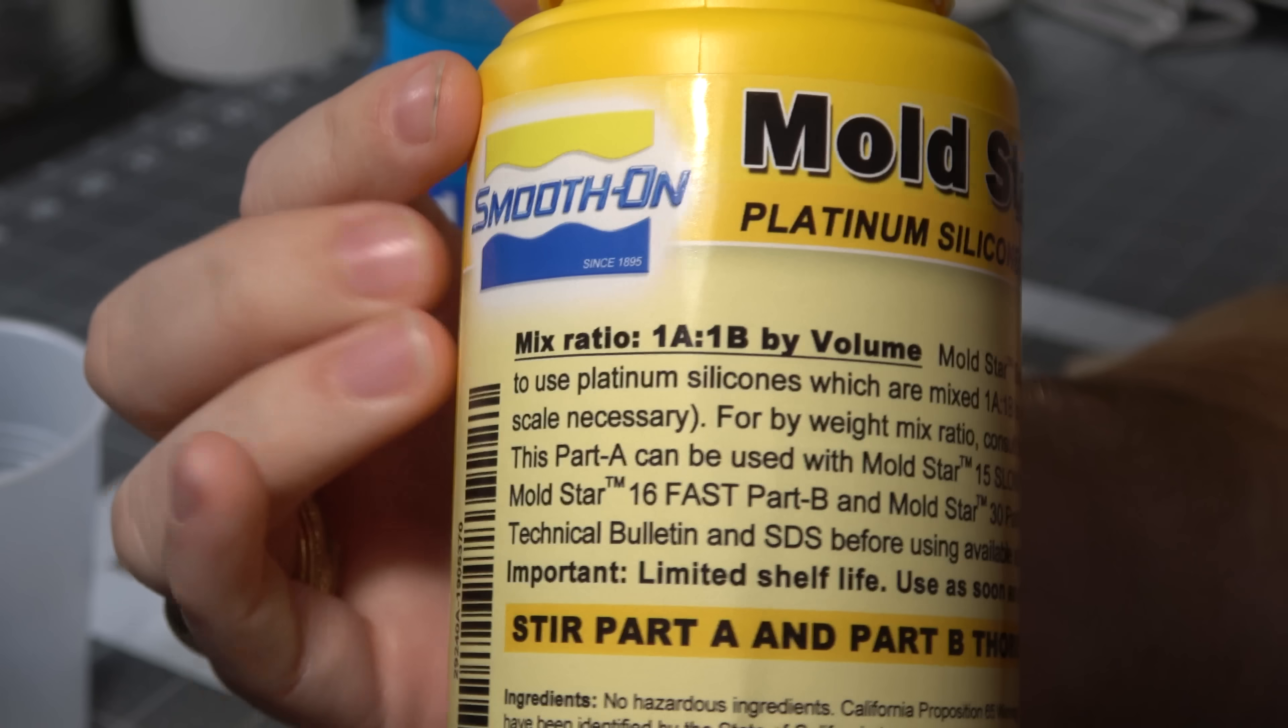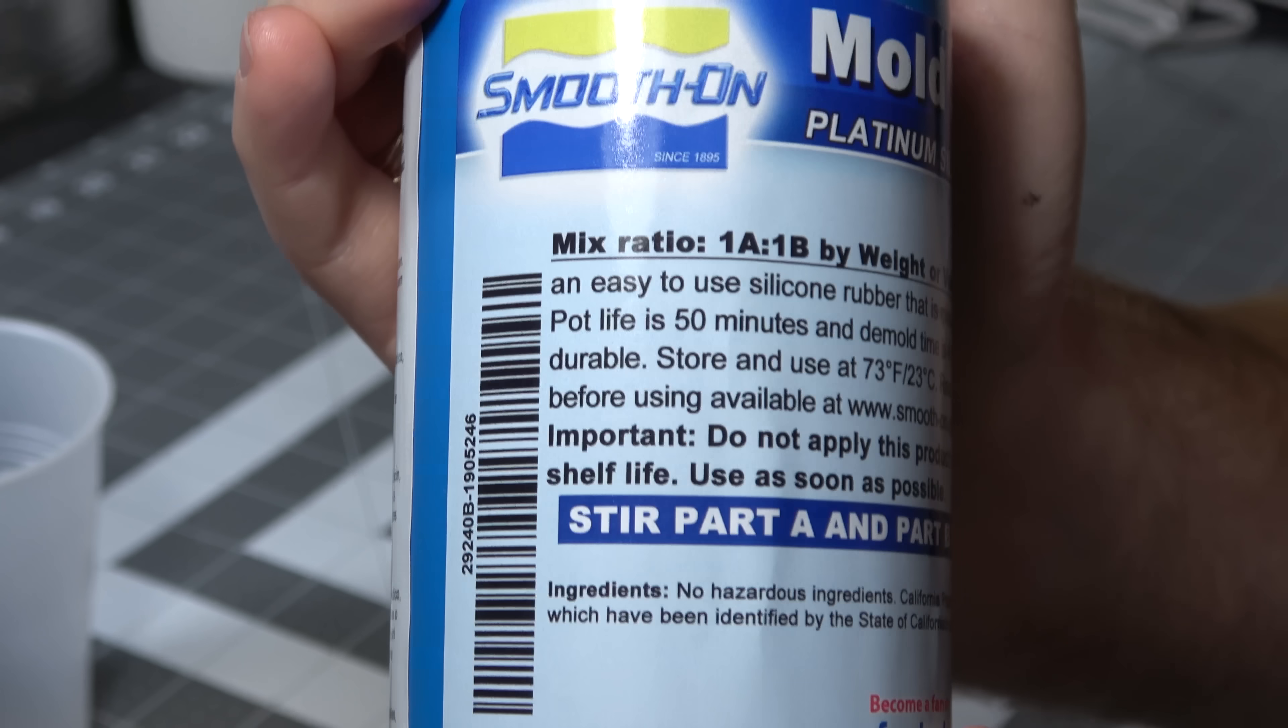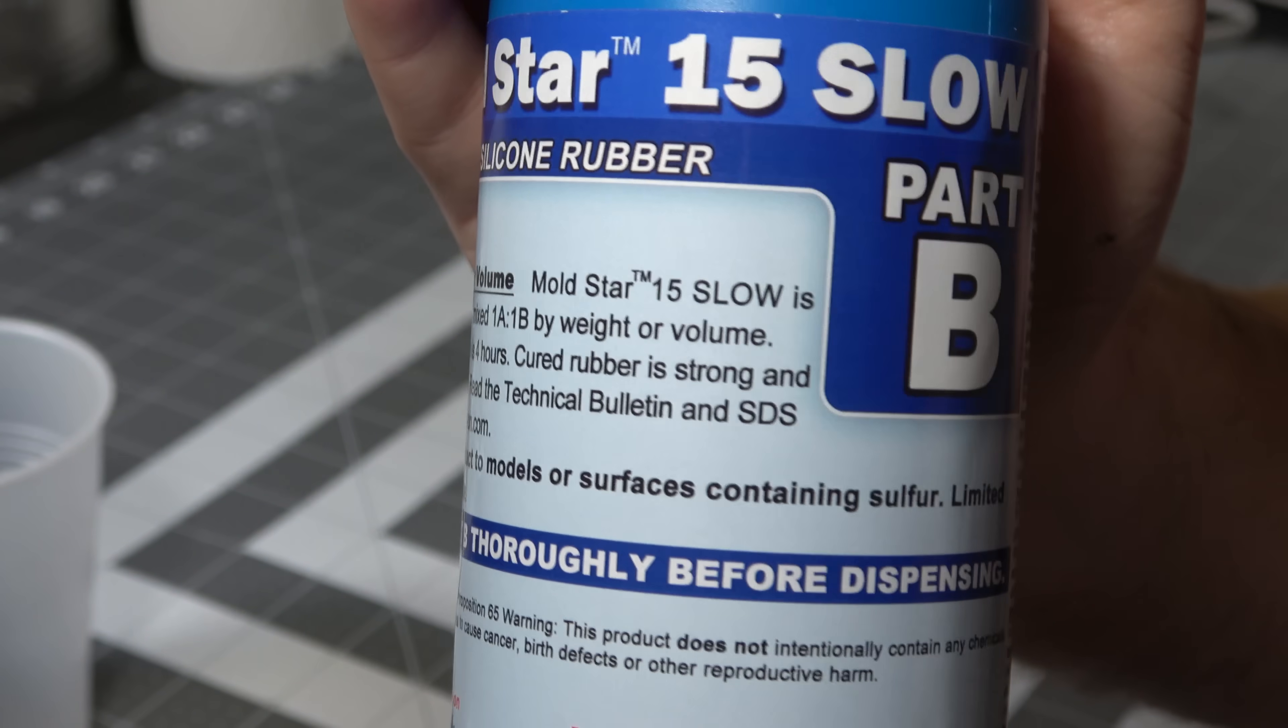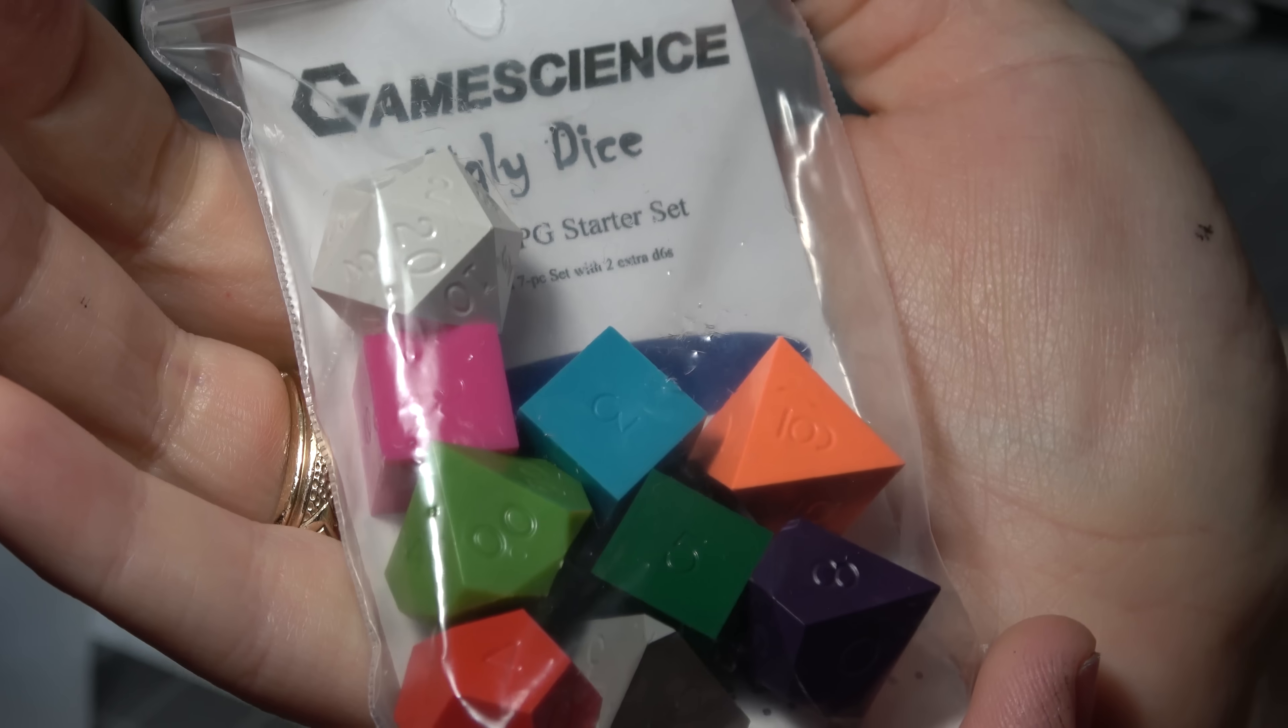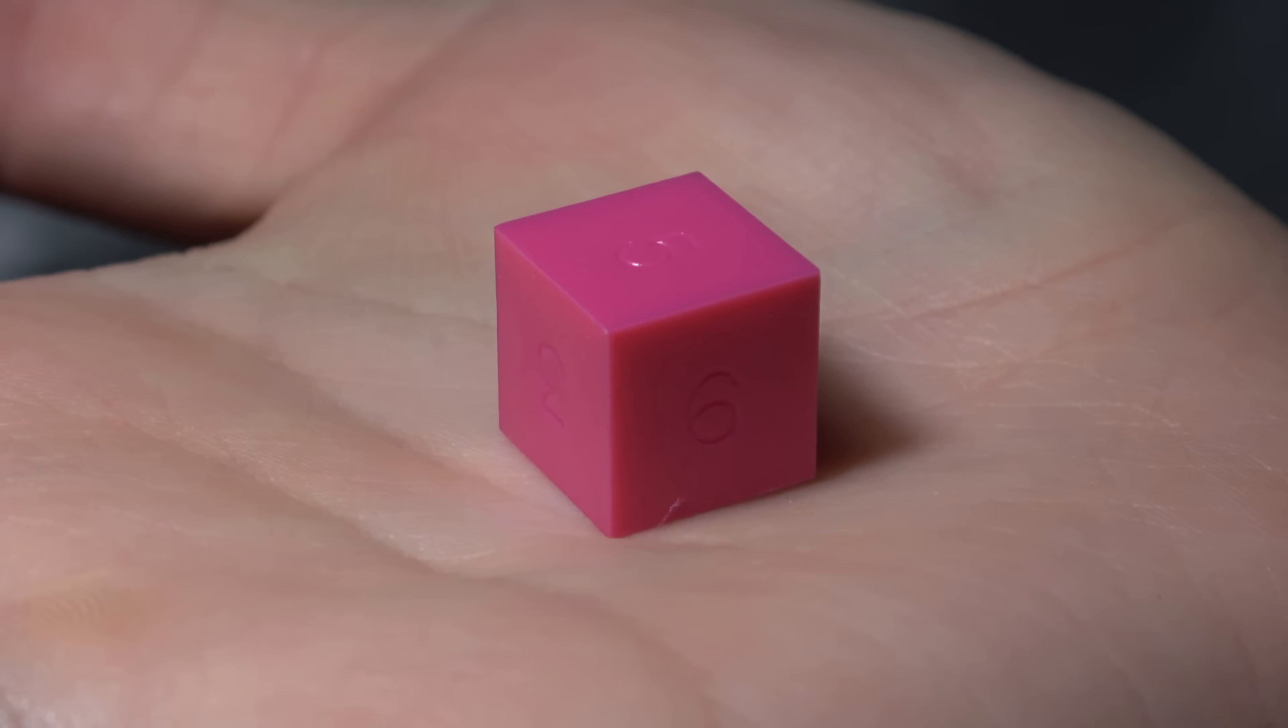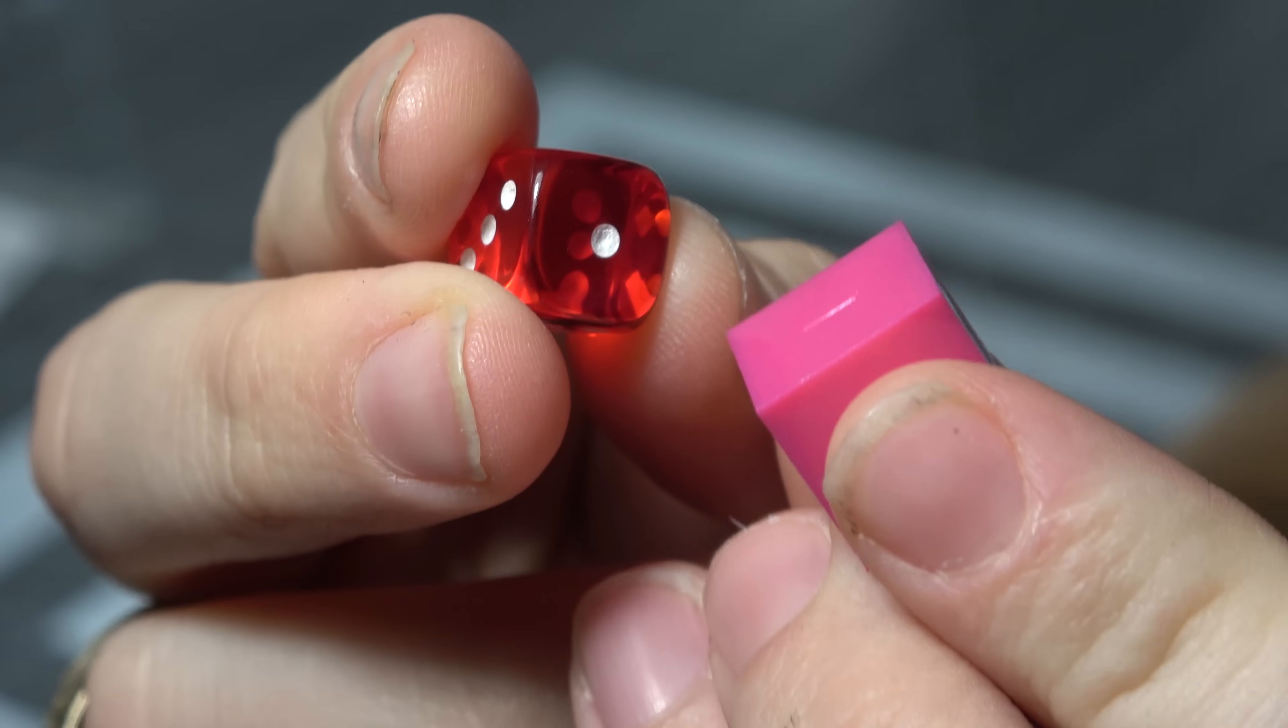So I've heard that these have worked from a number of people, but I really wanted to test it and have it on my channel and find out for myself whether it works or not. So I'm going to be using my normal Mold Star 15 Slow mold making material as well as Game Science dice because they're sharp edge dice. And I want to test them, but I want to say upfront using Game Science dice to make your own molds and sell them is illegal. So don't do it. This is purely for educational purposes and I wanted to see what they look like.